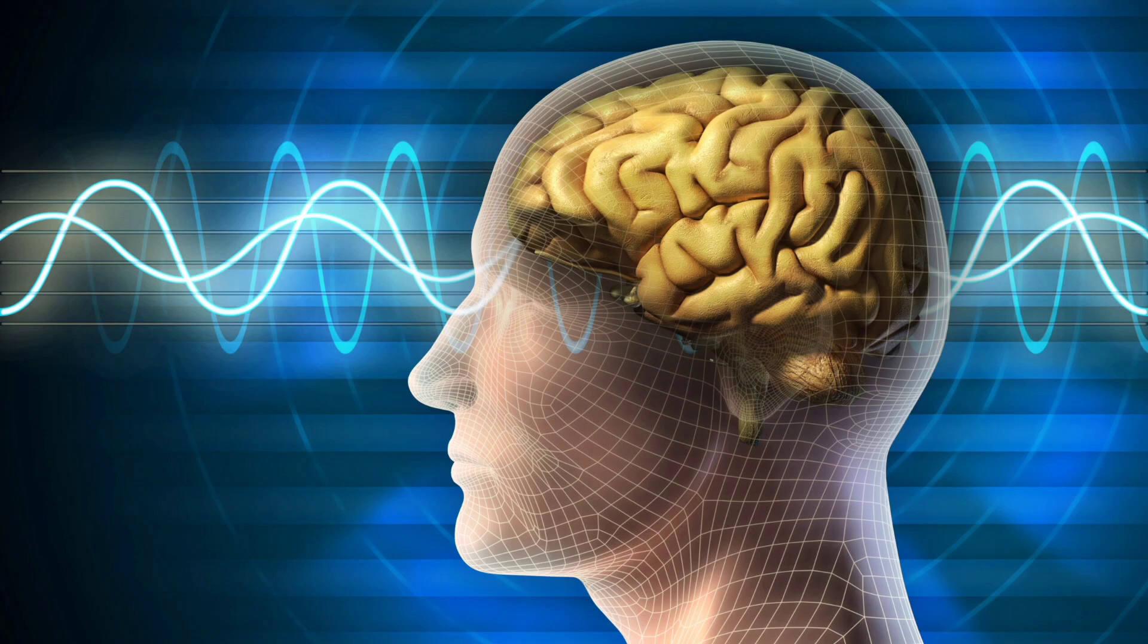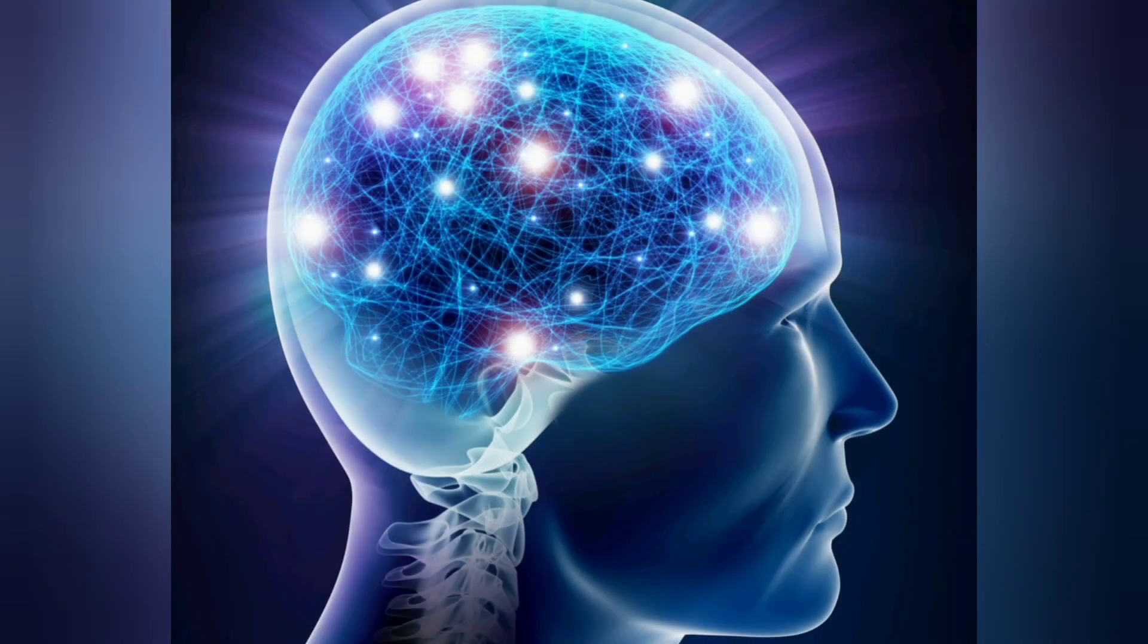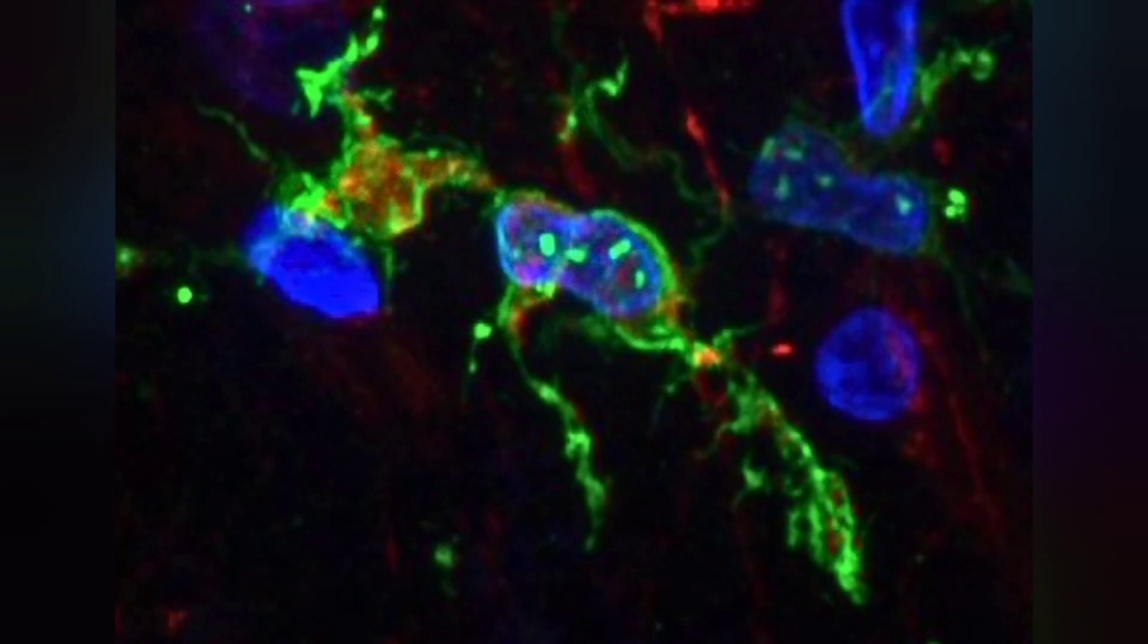Microglia are immune cells that help keep our brains healthy by clearing waste and preserving normal brain function. In response to infection or to clear out dead cells, these nifty shapeshifters can become less spindly and more mobile to engulf invaders and rubbish.